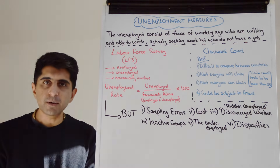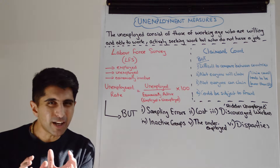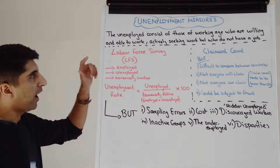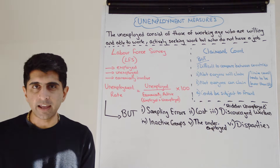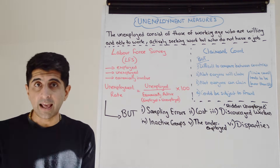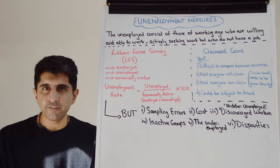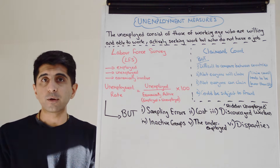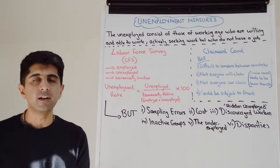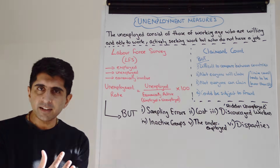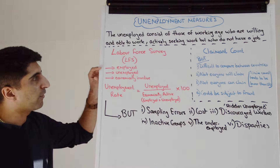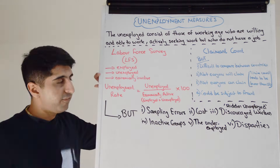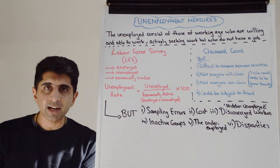Countries around the world will have two major measures of unemployment, with the dominant one being the LFS measure — the Labour Force Survey measure of unemployment. All that is is a massive survey conducted in the UK by the ONS, the Office for National Statistics. In that survey, a lot of questions will be asked of different households. In the UK, it's 40,000 households — that's 100,000 people are surveyed. And from the data that's collected, the ONS can work out the number of employed people and the number of unemployed people.